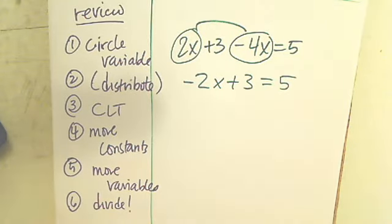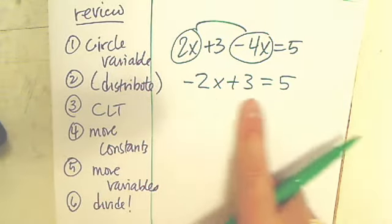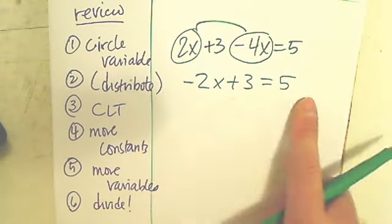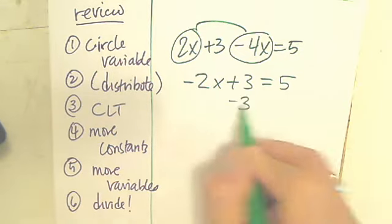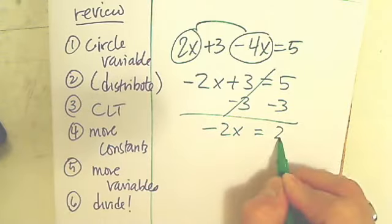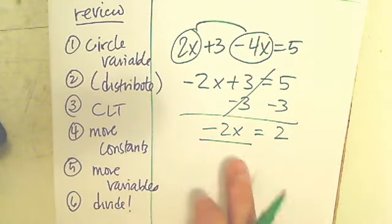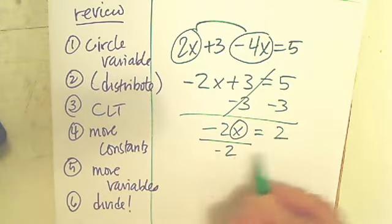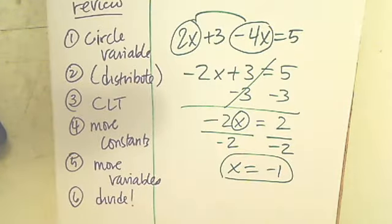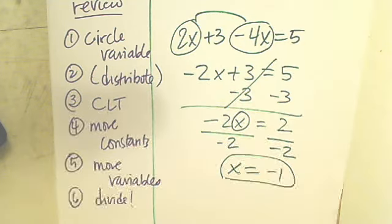Bring down the 3. Bring down the 5. Elamine, the next step. Do I have anything else to distribute? No. Do I have anything to combine? No. So I need to move a constant. Which number do I move over? Take over. So take away 3. Good. Bring down the negative 2x. 5 minus 3 is 2. The last step is to divide to get the letter by itself. Divide by negative 2, you get negative 1. Remember that the variable cannot be negative. Therefore, you divide by negative 2 instead of 2. Questions?